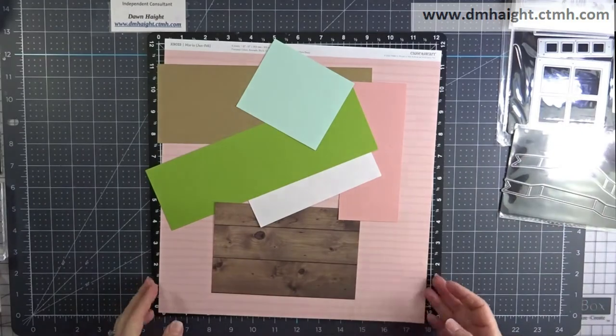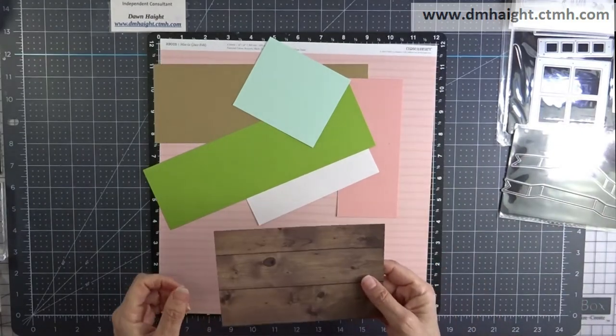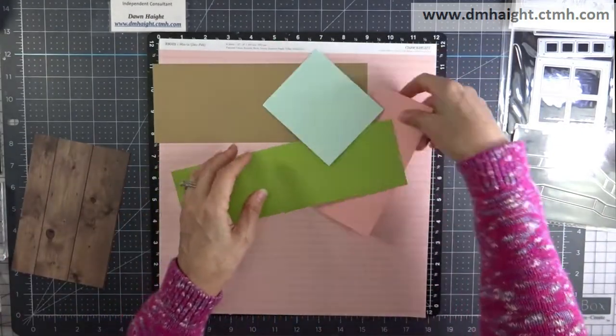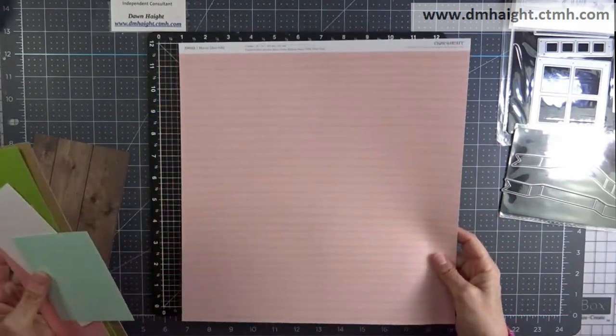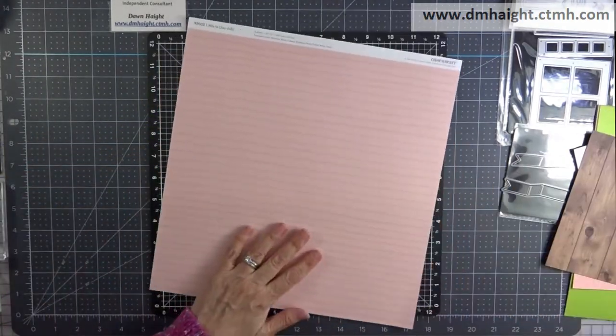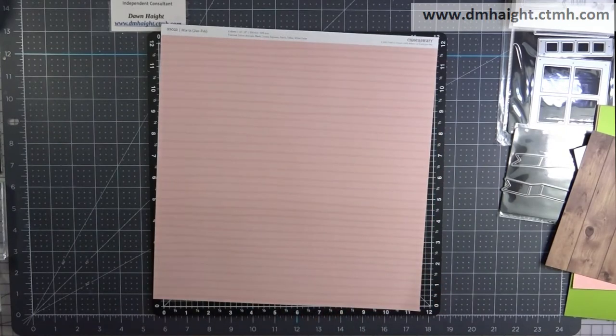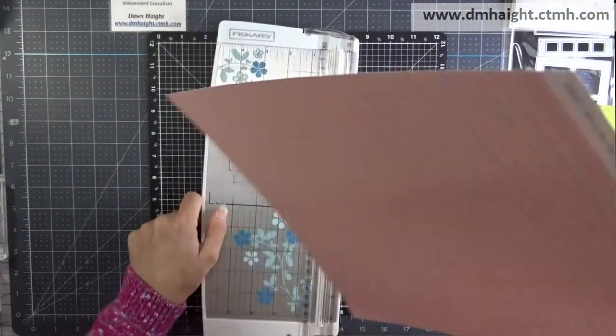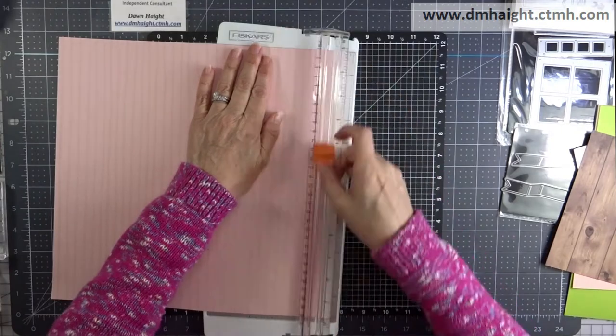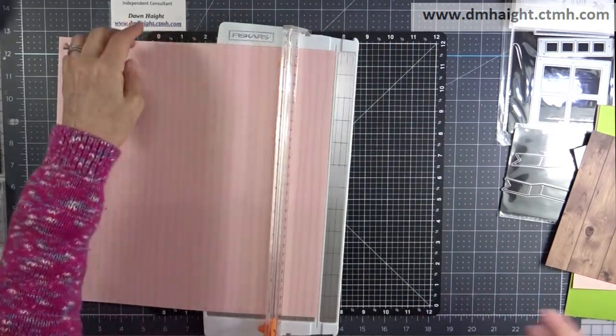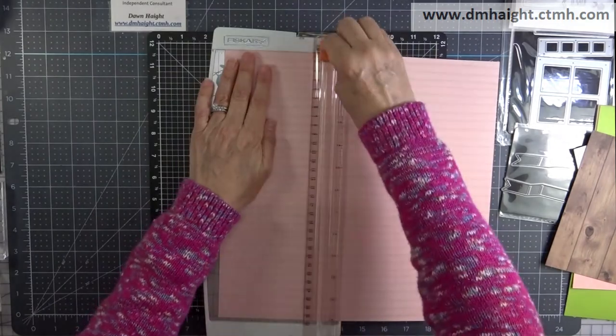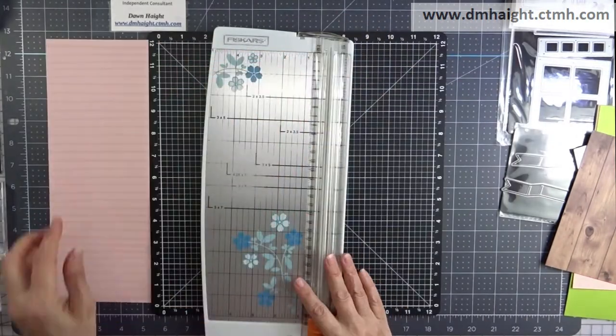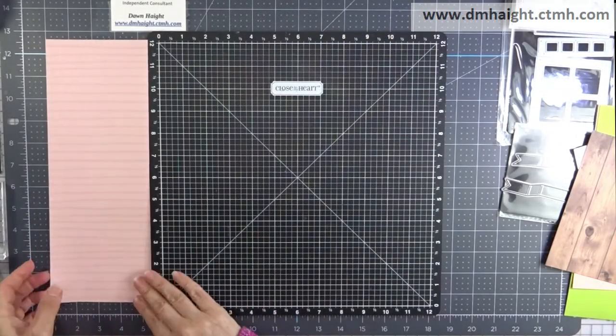I'm going to use the Tree Stampin' Thin Cuts, Woodgrain Papers, a variety of cardstock, and this background paper from the current mix-in collection. Okay, so let's get started. I'm going to trim my piece of mix-in at four and a half inches and I'm going to be cutting this with a die cut.